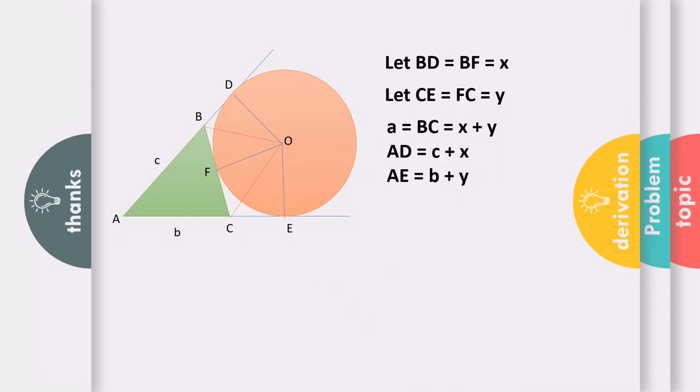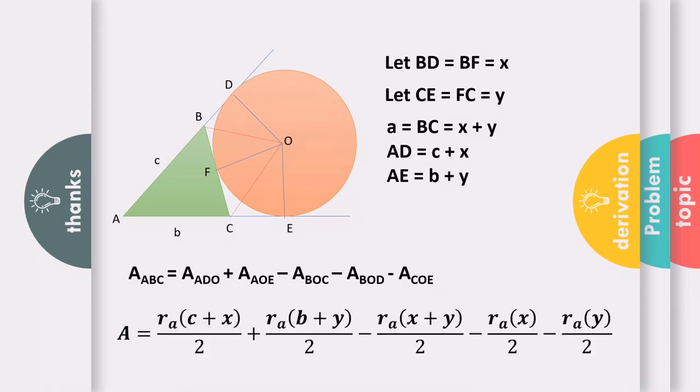Let the radius OD, OF, and OE be radius R sub A. So in this figure, to get the area of triangle ABC, you need to add triangle ADO plus triangle AOE. But to get ABC, you need to subtract triangle BOC, subtract triangle BOD, and subtract triangle COE.